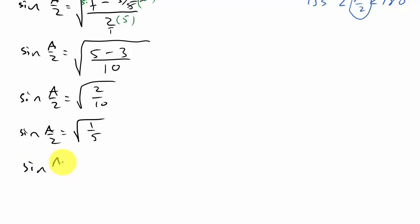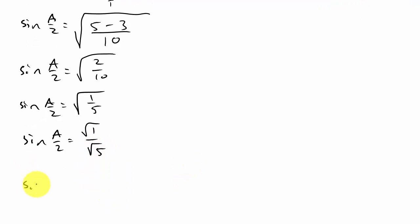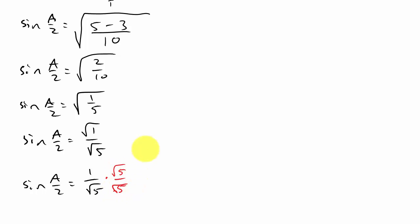So sine of a/2 equals the square root of 1 over the square root of 5, which is 1 over √5. Depending on your teacher, you may need to rationalize the denominator — multiply by √5 over √5 — giving √5 over 5. So sine of a/2 equals √5/5.